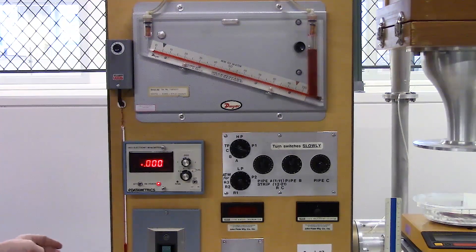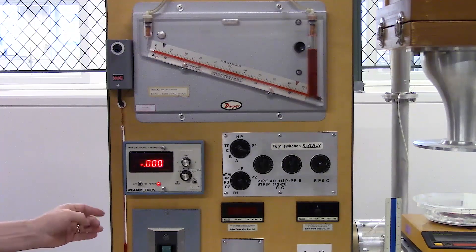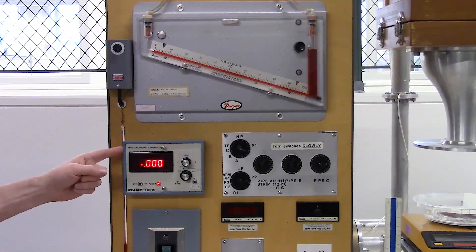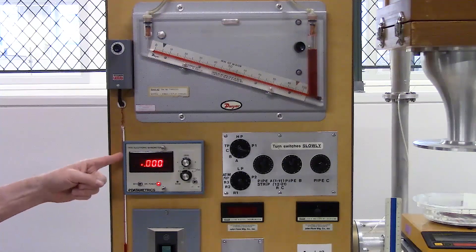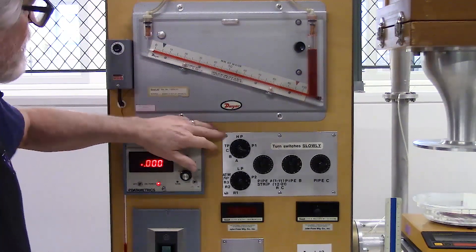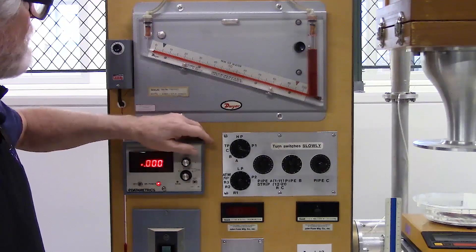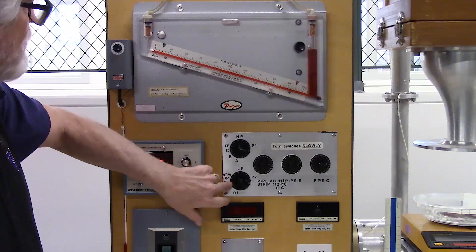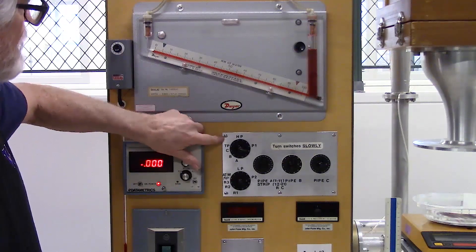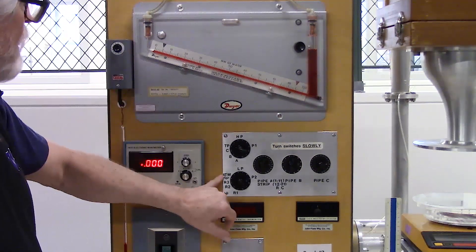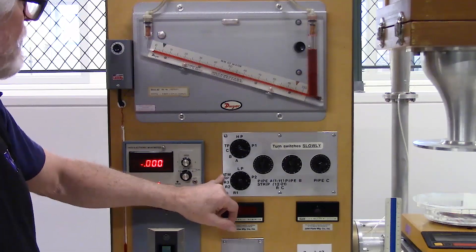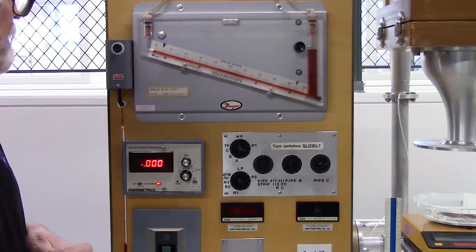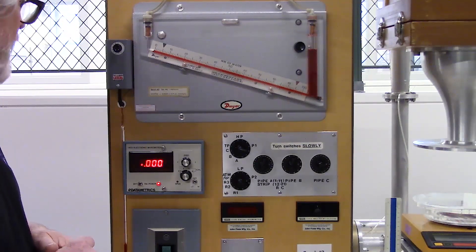The pitot tube is routed through a differential pressure transducer. The signal of that transducer is sent to this digital manometer here. That reads out in millimeters of mercury. We can connect various signals to that differential pressure transducer. We have a high pressure side and a low pressure side. In our case the high pressure side is connected to the pitot tube. The low pressure side is connected to atmospheric pressure. We can use these switches here to connect various pressure taps through that transducer and we'll go over that more in a future lab.